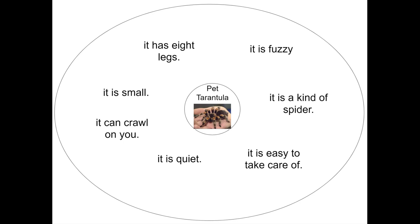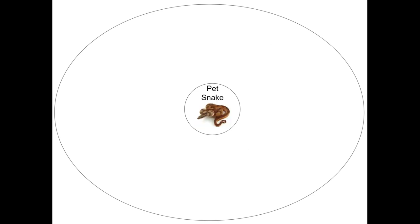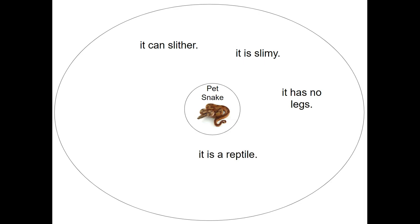But not all of you wanted a pet tarantula — some of you said you would rather have a pet snake. Here were some ways to brainstorm ideas of why you might want a pet snake: I like a pet snake because it can slither; because it is slimy; because it has no legs; because it is a reptile; because it sheds its skin; or because it can be nice — not all snakes are mean, as we were talking about in our Zoom.